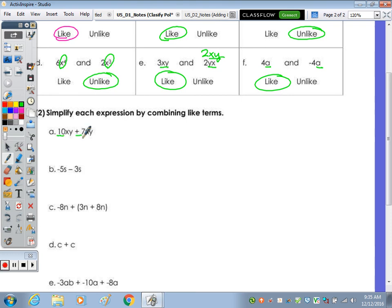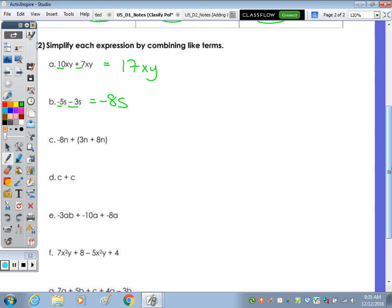We're only combining the coefficients out front. The xy stays the same. So 10 plus 7 is 17, and we leave the xy. Same below, we have a negative 5 minus 3, which would be a negative 8. The s stays the same. When we have grouping symbols, we need to remove them. And when you add a binomial or distribute the positive sign through, that does not change the signs.